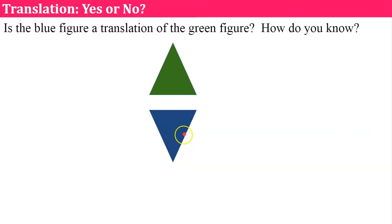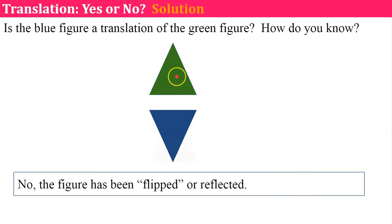Is the blue figure a translation of the green figure? And how do you know? The answer is no because there is nothing I can do if I translate. If I just slide, I can slide it left and right, up and down, but I would have to flip the green triangle over to get it to line up with the blue. So therefore, the answer is no. They are congruent, but I cannot just slide it to get it on top.